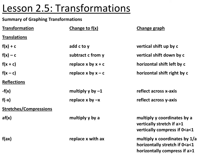The first type that we have are translations — shifting your graph up, down, left, or right. Anything added to the outside or the end of a function will move your graph up or down. If it's adding, it moves up — a vertical shift — and you add that value to your y-coordinates. If it's subtracting, you subtract that value from the y-coordinates, which shifts it down.